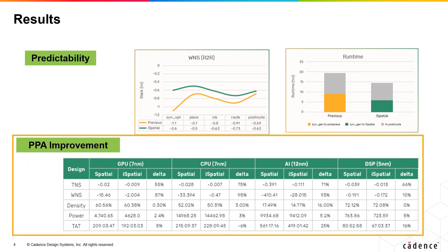iSpatial technology delivers improved full-flow PPA results through GigaPlace and GigaOpt tools, Early Clock Flow, physical restructuring, and MUX and data path restructuring. The whole flow runtime of the iSpatial flow has also been greatly reduced by bringing a higher quality design into the Innovus system.